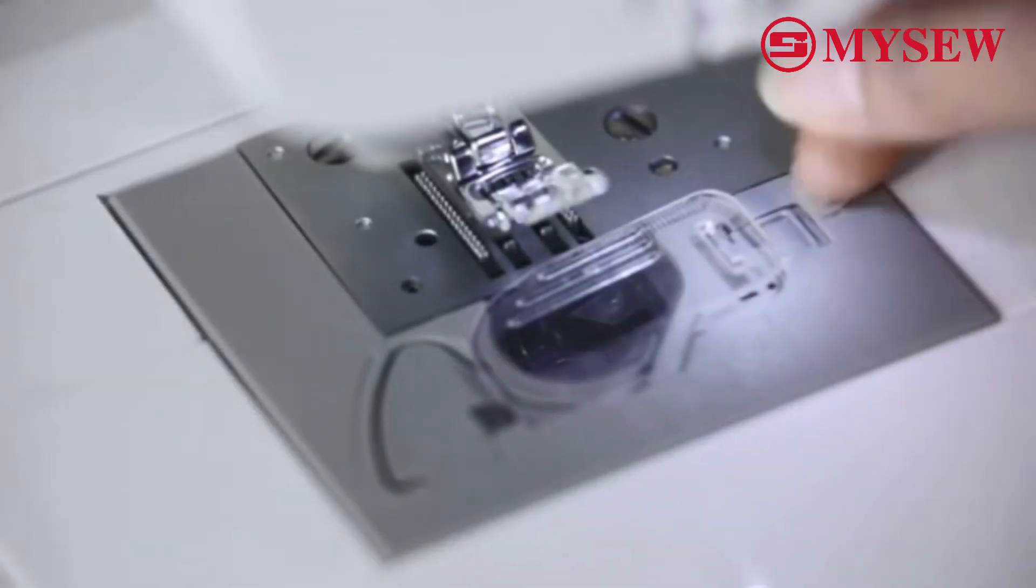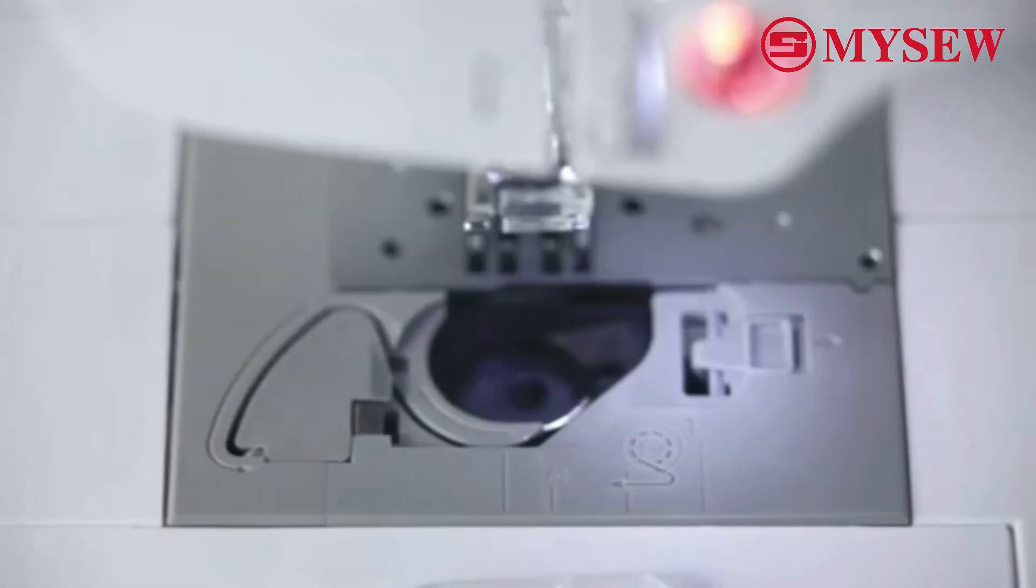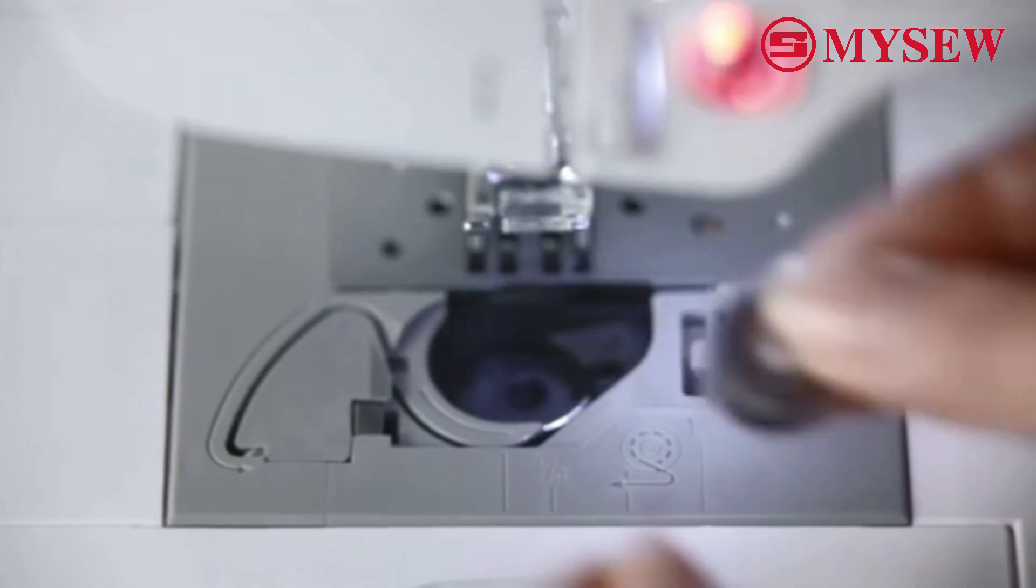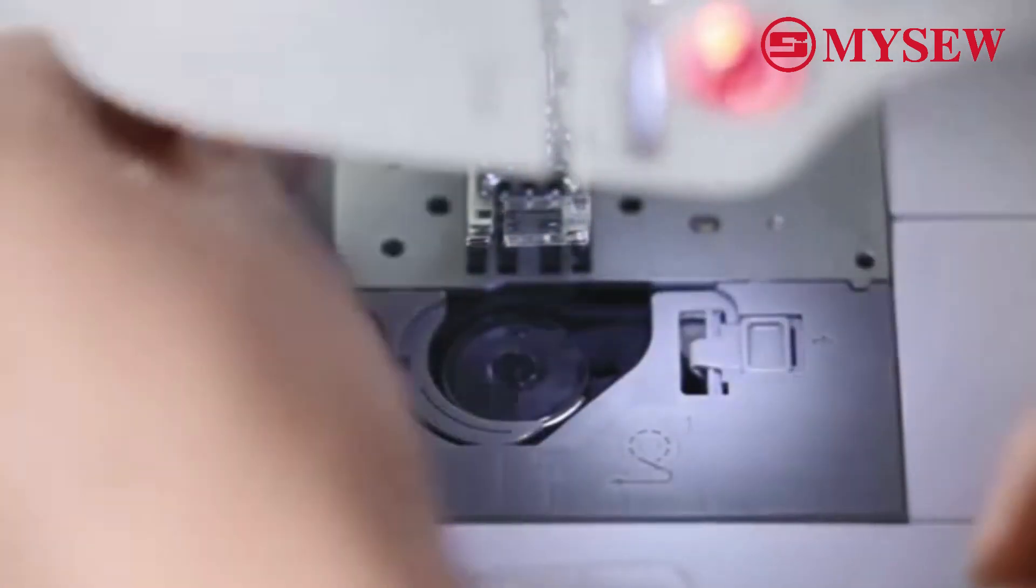Open the bottom thread transparent cover. Place the bottom thread counter clockwise in the direction shown on the machine. Cut the ends with a secant cutter.